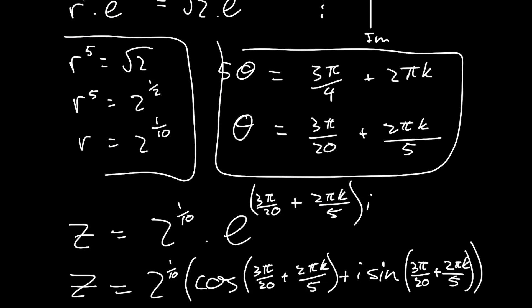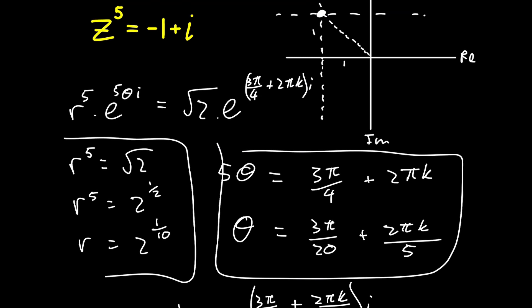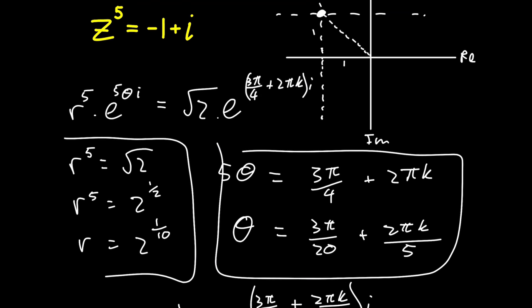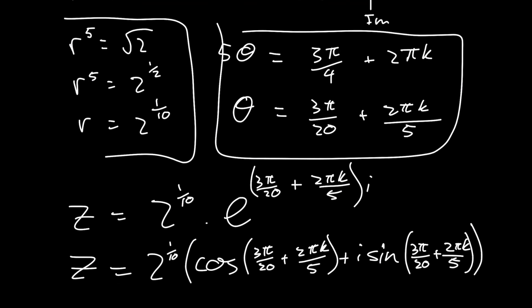This would give us all of our specific solutions. And the reason why I said zero, one, two, three, and four was because this was initially to the power of five, so we have five solutions. Obviously the first solution is with k being zero, because if k was zero, that term falls away. And then we do every term going up to the fourth term, and that's five numbers.